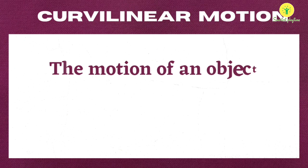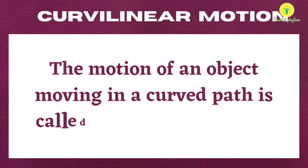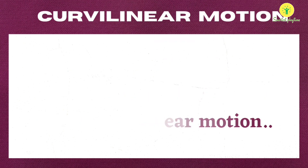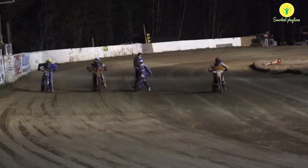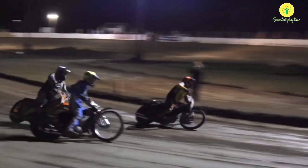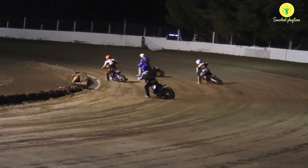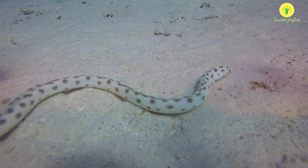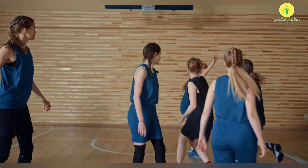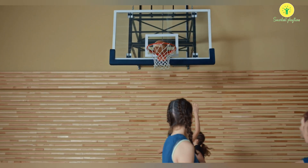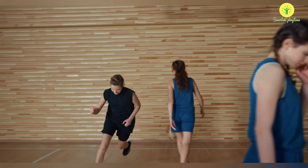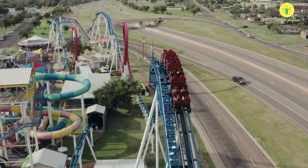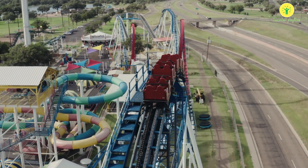When any object moves in a curved path with respect to time, it is called curvilinear motion. Motion of bikes on a curved race track, motion of a snake, motion of a basketball into the basket, and roller coaster rides are few examples of curvilinear motion.